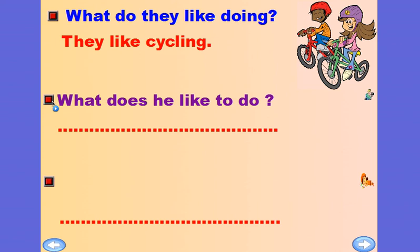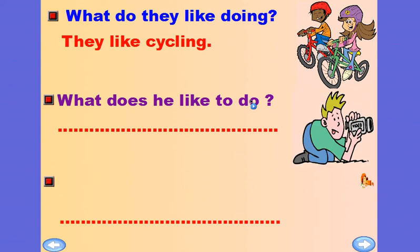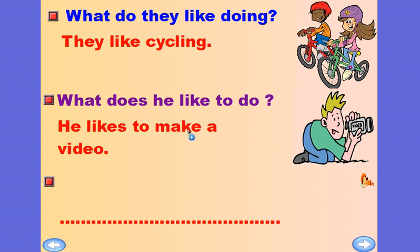The next question: What does he like to do? We can also ask this as: What does he like doing? Let's see — he likes making a video. Don't forget to add 's' to 'like.' He likes to make a video — 'to' plus the verb in the infinitive, or verb plus -ing without 'to.'